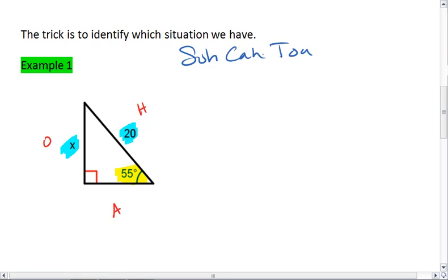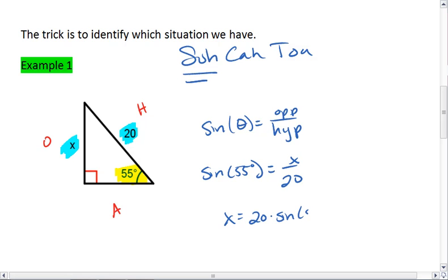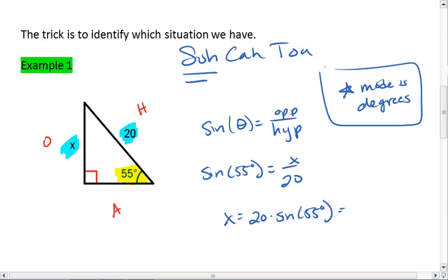Our SOHCAHTOA. We know sine of theta equals opposite over hypotenuse, meaning sine of 55 degrees equals X over 20. X will equal 20 times sine of 55 degrees. Again, make sure that your calculator's mode is degrees. We can type this in. We get sine of 55 degrees is about 0.819. We multiply it by 20, and we will get 16.383. And that is our missing value for X.